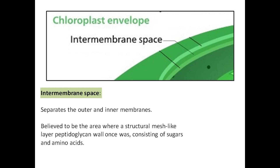The intermembrane space separates the outer and inner membranes. It is believed to be the area where a structural mesh-like layer, peptidoglycan, once was, consisting of sugars and amino acids.